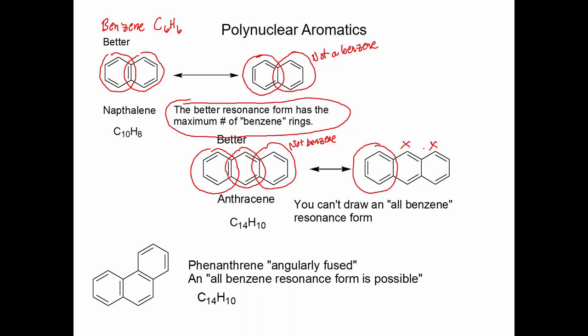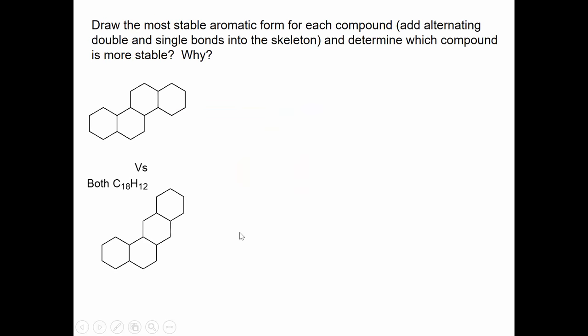That's not the only way we can fuse three benzene rings together. We can also have phenanthrene, which is what we call angularly fused. And an all-benzene resonance form is possible for phenanthrene. It's also C14H10. Notice that as we fuse more and more benzene rings together, the carbon-to-hydrogen ratio is increasing as we're getting more carbon atoms per hydrogen atom. C6H6 goes to C10H8, C14H10. So we're going to see this trend going as we fuse more and more of them together. Here's four benzene rings together, and these are C18H12.